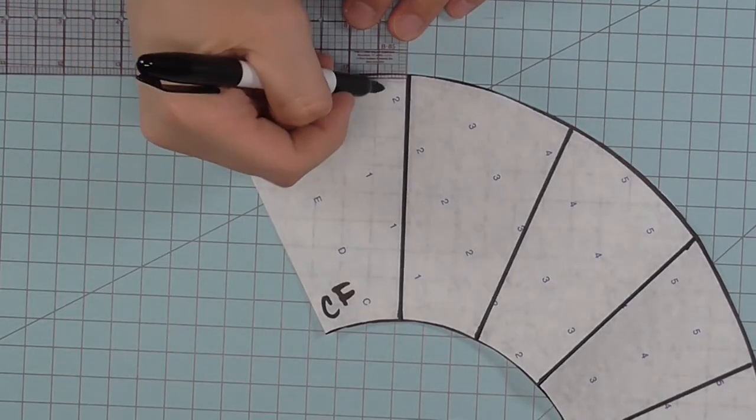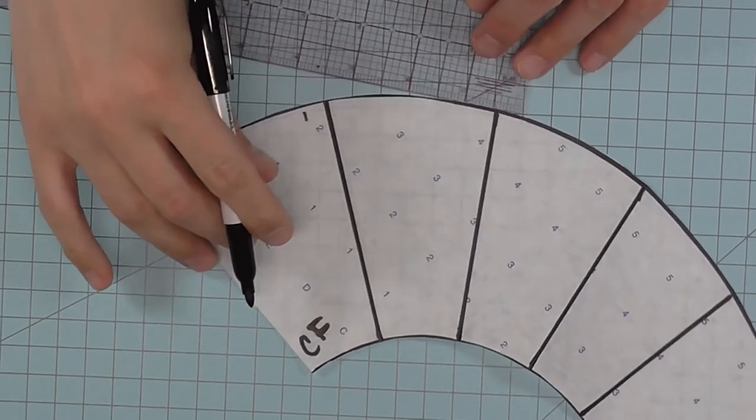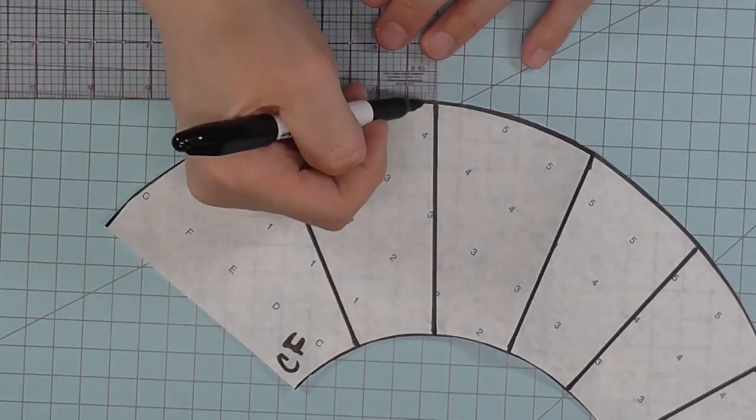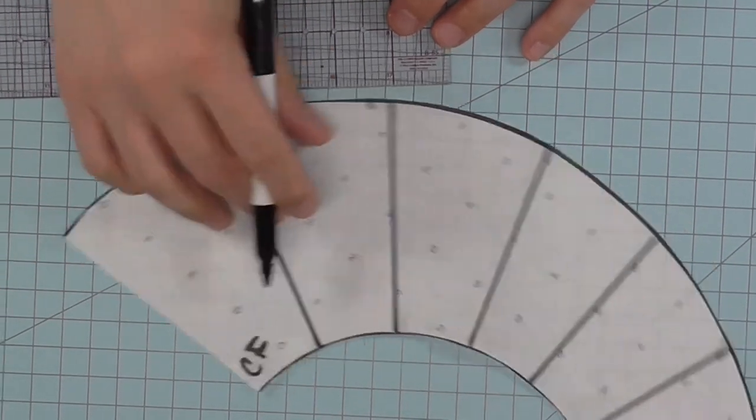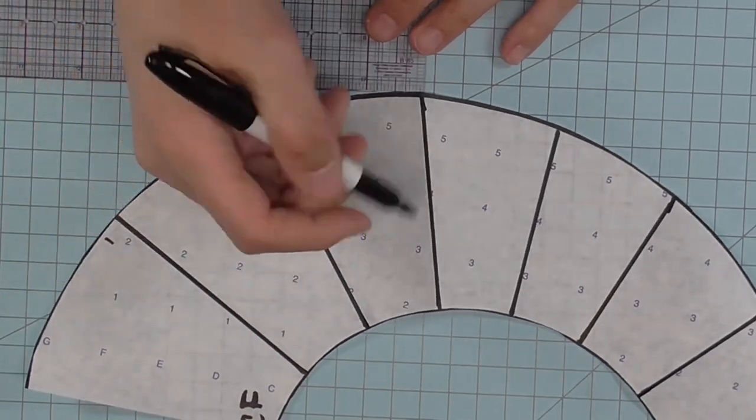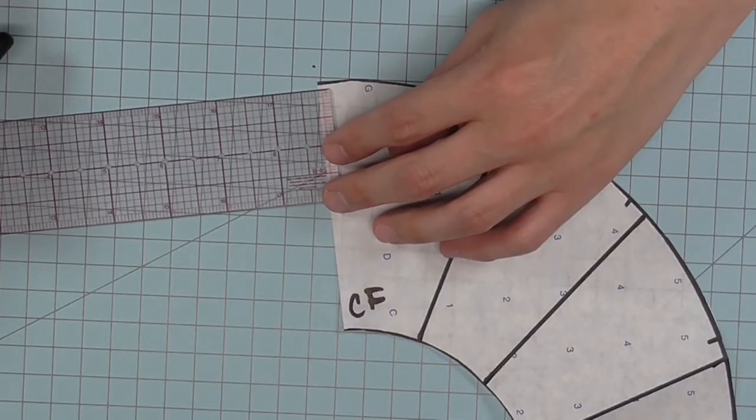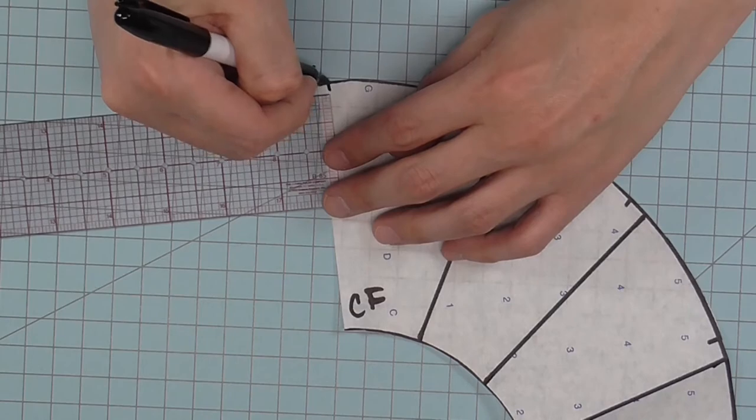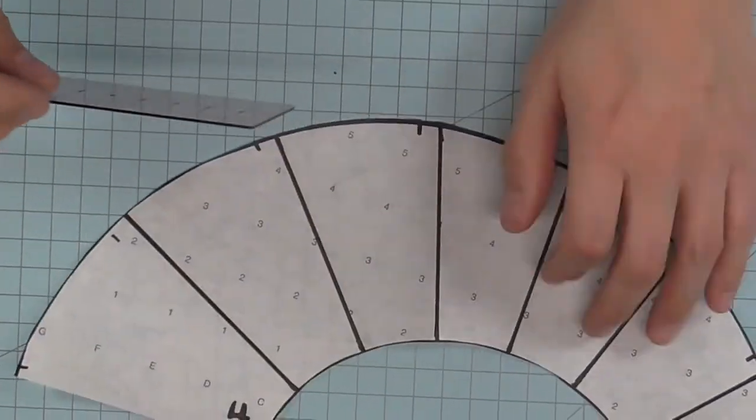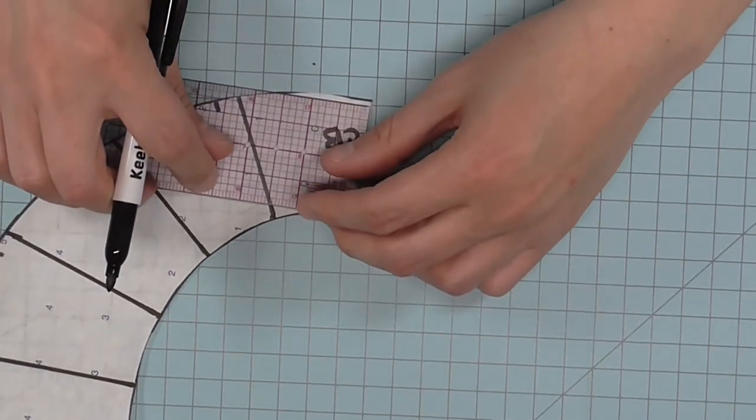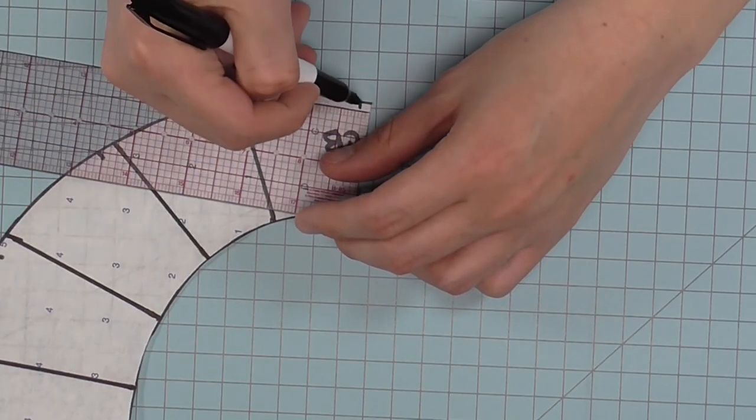Now you're going to measure in from each of the lines the set distance you want to reduce the outer edge by. In this case, I'm reducing by three eighths of an inch. You can see more about this in the basic bucket hat pattern video. At center front, I'm reducing by one half of my measurement. In this case, three sixteenths is half of three eighths.